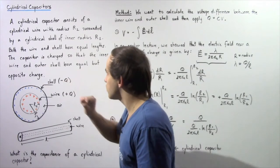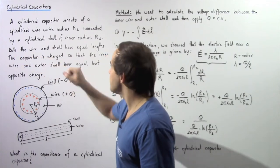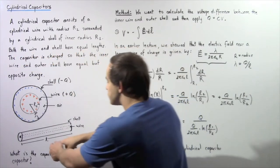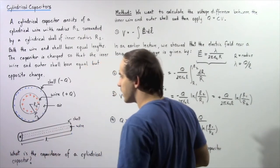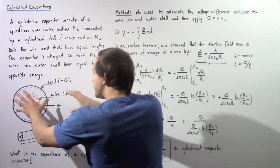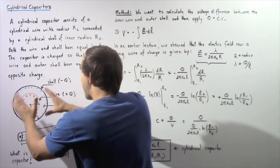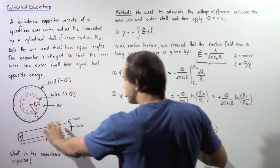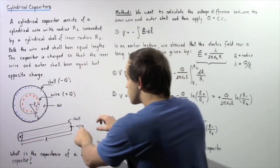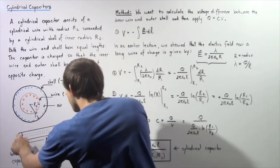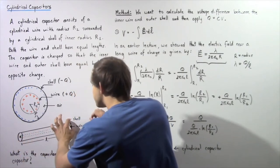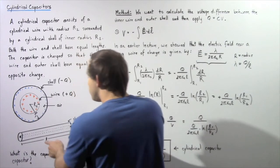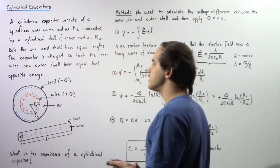The capacitor is such that both the wire and the shell have equal length, as shown in the following diagram. So if we take our cylindrical capacitor and examine the side view, we're going to see something like this. This will be our inner wire and this is our outer shell, and the length of the wire and the shell will be exactly the same.